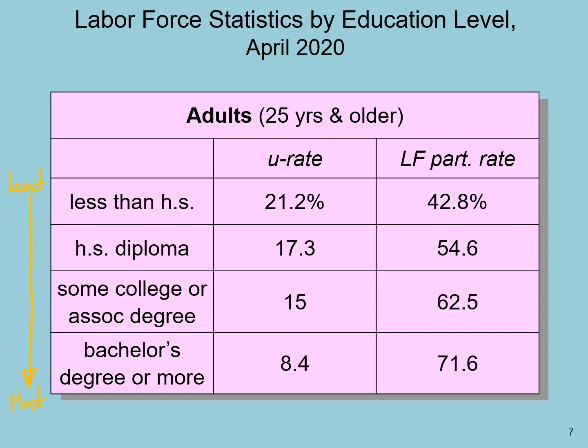For workers with a high school diploma, 17.3% is their unemployment rate, and the labor force participation rate is higher at 54.6%. As we keep going down the list, something becomes apparent: as workers have more education, their unemployment rate decreases — even during the terrible COVID-19 crisis. Similarly, as you increase your education, a worker is more likely to participate in the labor force. So, your likelihood of being in the labor force increases with more education, and pursuing education provides some insurance against unemployment.